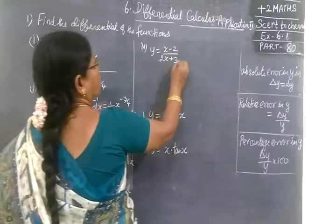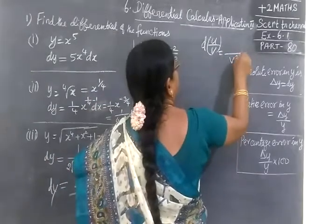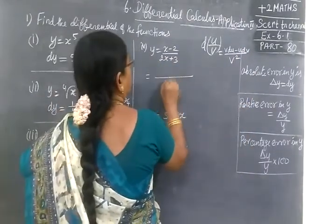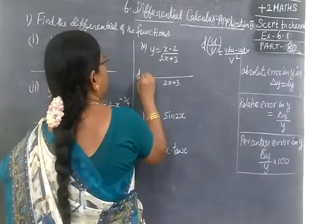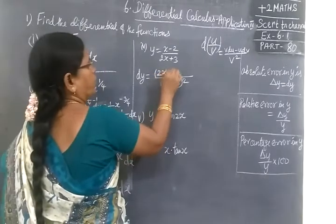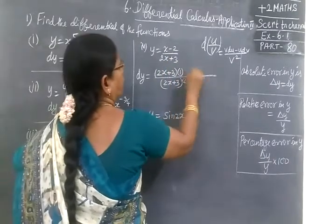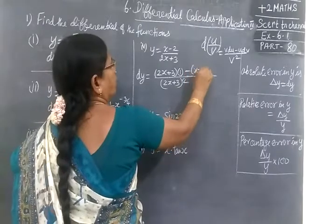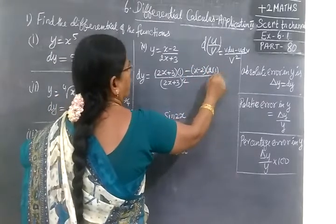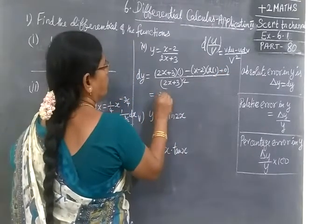Then next, which method we are going to do? U by V method. D of U by V equal to V square, V du minus U dv. So equal to 2s plus 3. dy equal to 2s plus 3 whole square. That is V du. 2s plus 3, differentiation 1, 2, 0. And minus numerator differentiation. Then denominator differentiation, 2 into x, differentiation 1. 3, 0. So that will be. So equal to 2x plus 3,